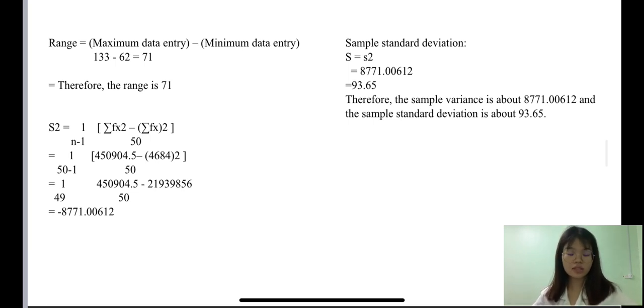Therefore, the range is 71. The sigma squared is approximately 771.00612, and the sample standard deviation is 93.65. Therefore, the sample variance is about 771.00612 and the sample standard deviation is about 93.65. That's all for me. Thank you.